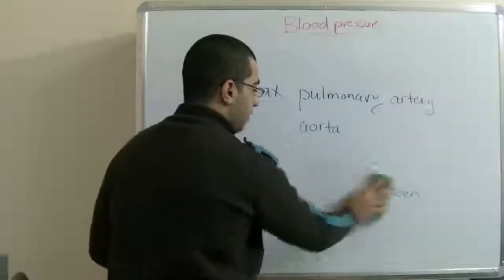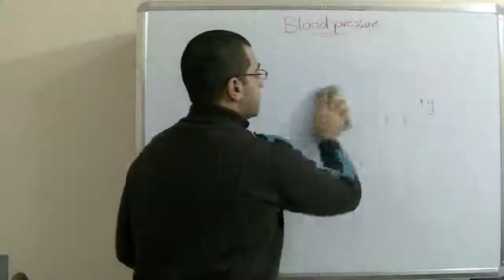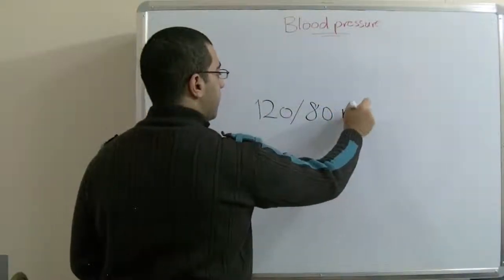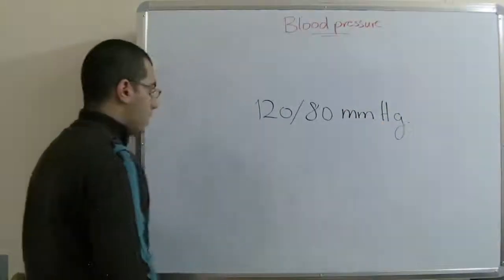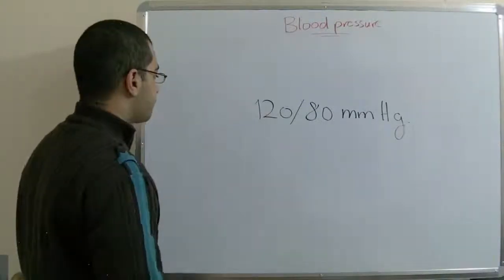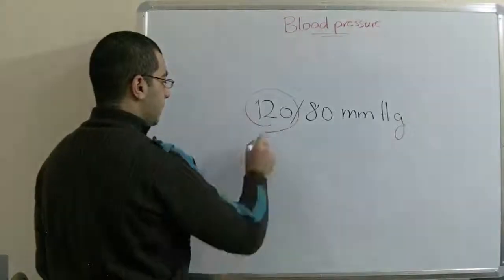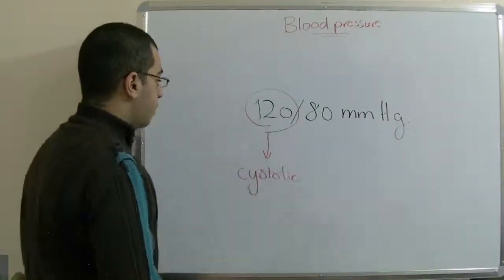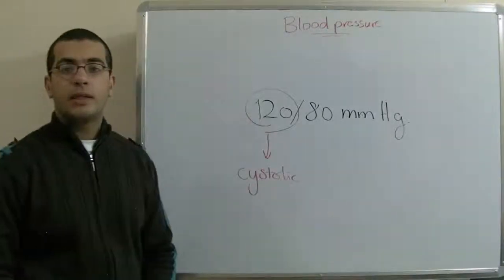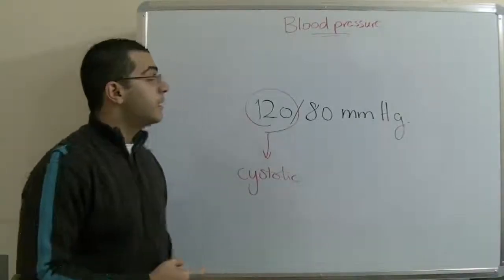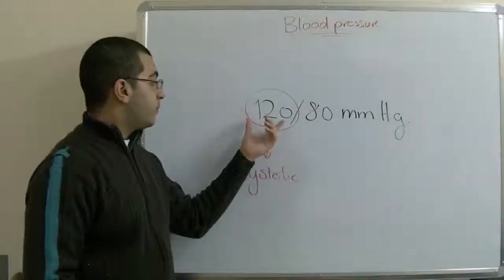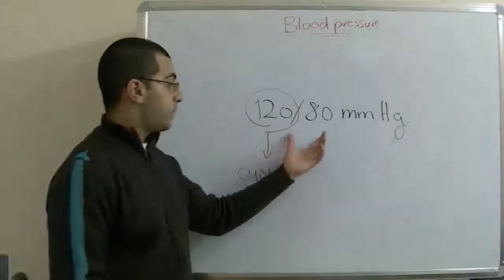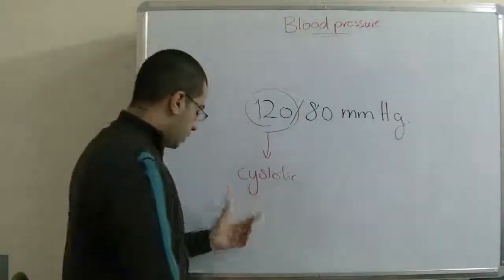The blood pressure has a normal level which is referred to as 120 over 80 mmHg. The number 120 refers to something called the systolic reading or measure. The systolic is when the heart contracts. When the heart contracts, the maximum blood pressure is achieved. So the blood pressure at this time is 120 mmHg, and this is the normal blood pressure. This is called the systolic reading.